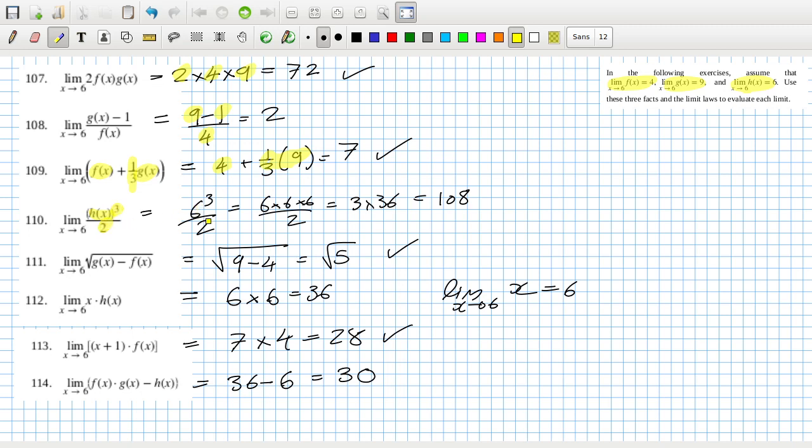...two. So six cubed over two is six by six over two, which is three by 36, is 108. This is the root rule, so it's the root of g minus f, which is nine minus four, which is root...